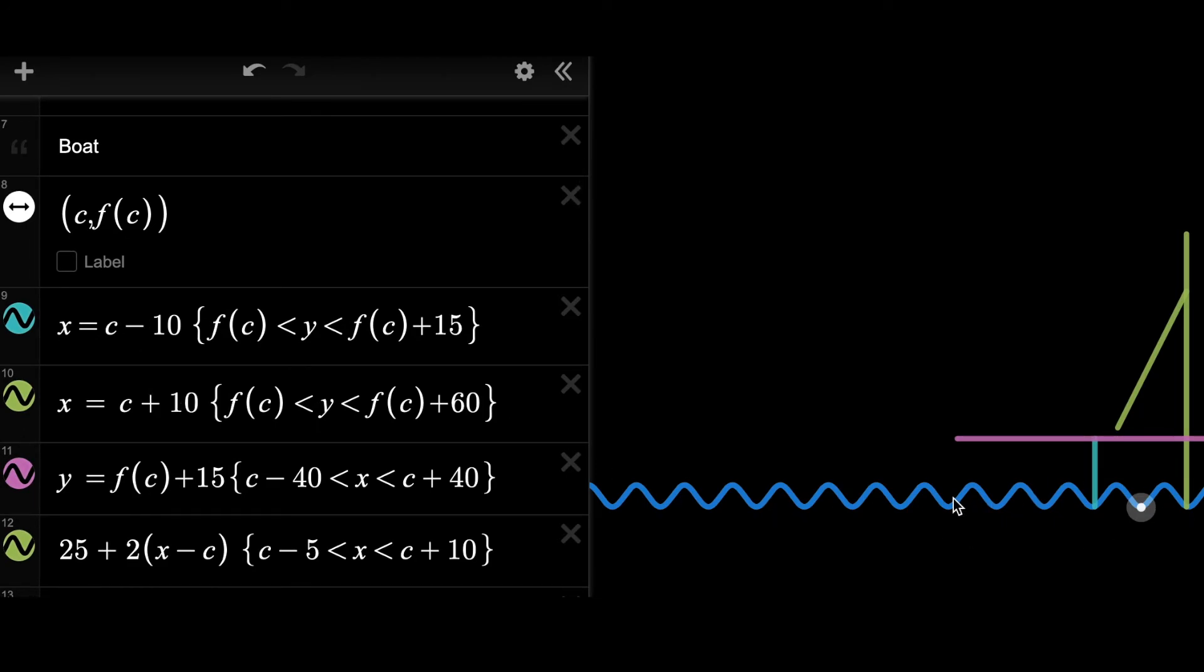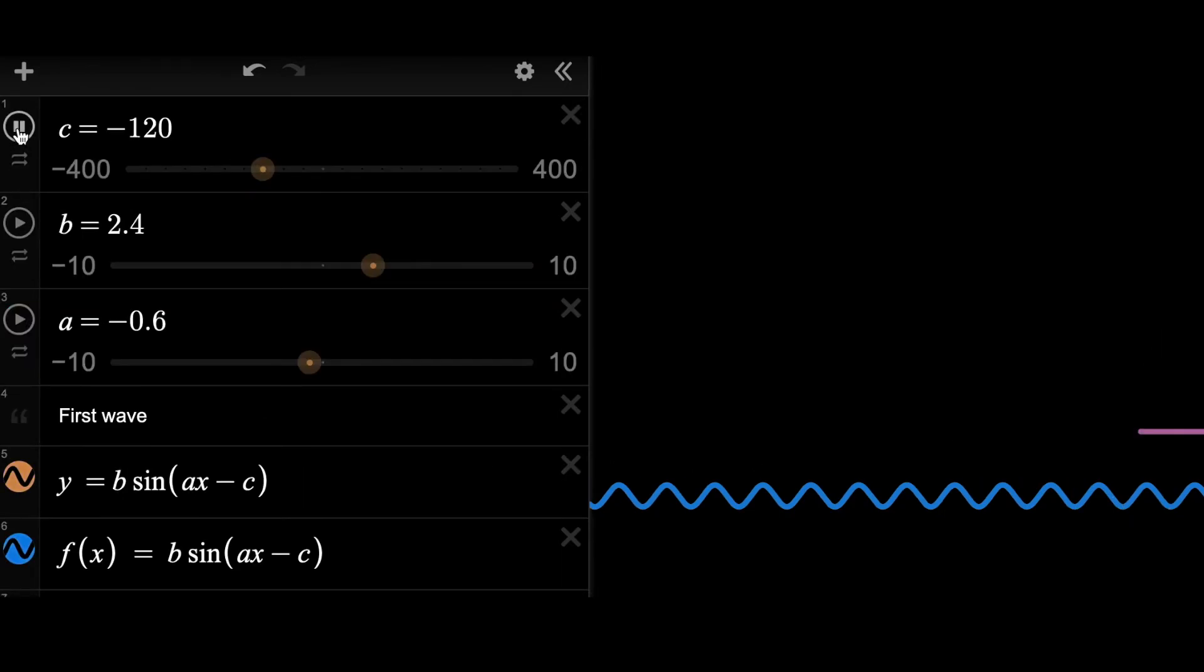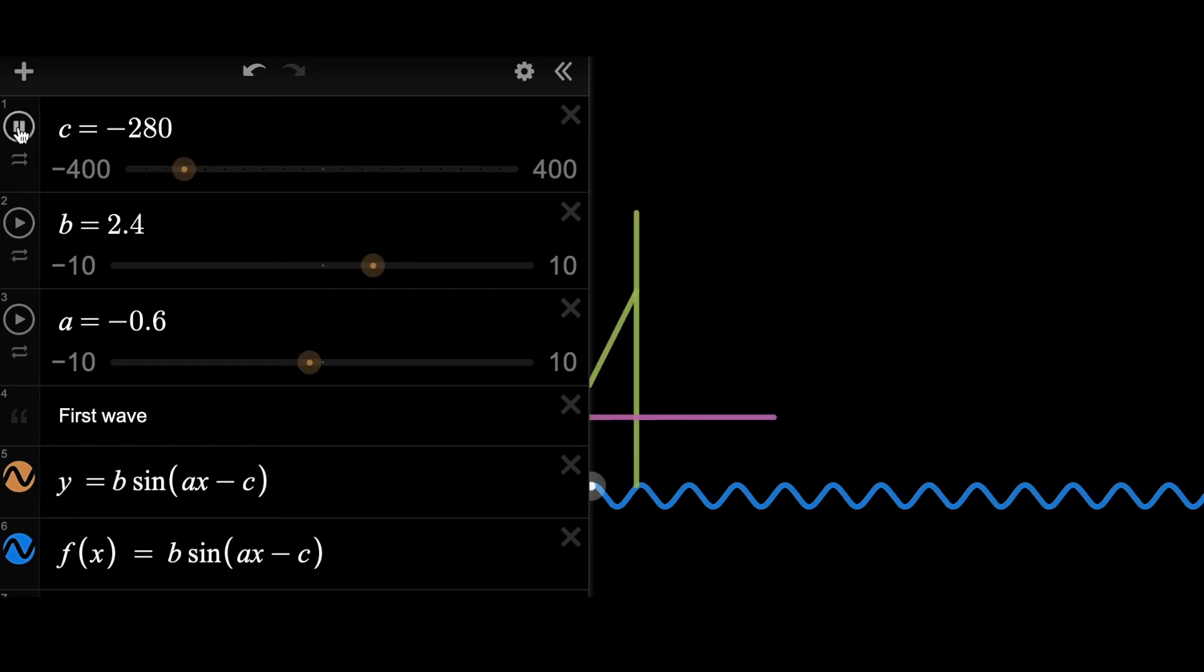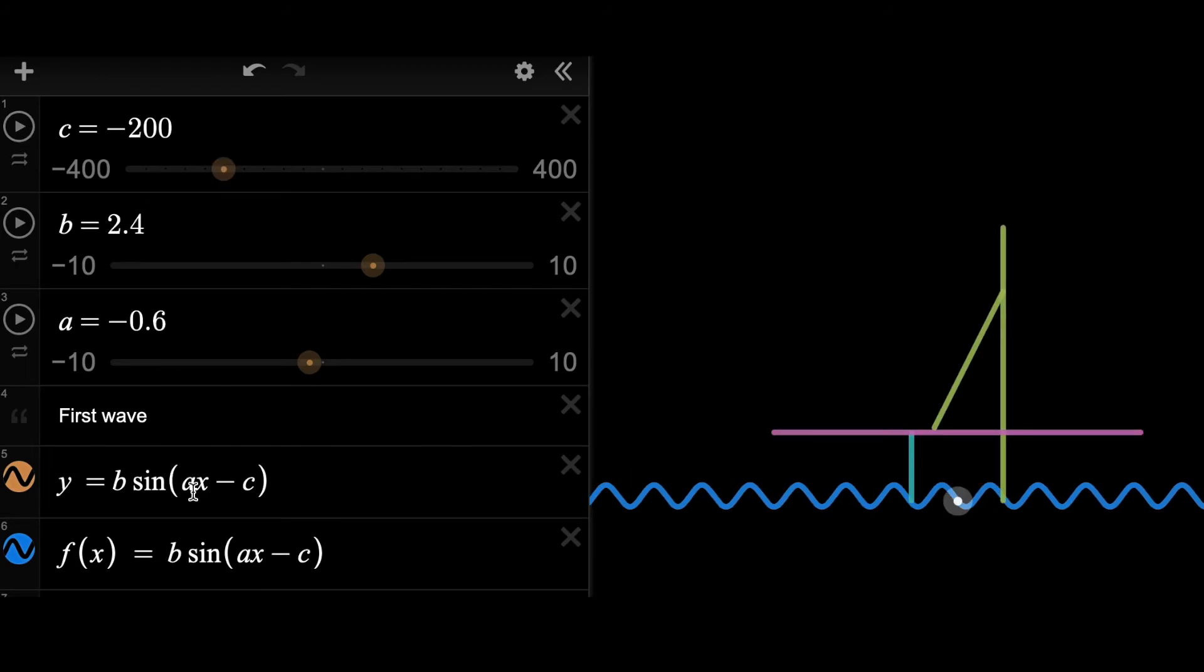So then when the wave moves, the boat will move along with the wave. Now let's run the value of c to make the animations. As c changes, the wave functions is moving right according to the value of c. And you can see that the boat is moving along with the wave.